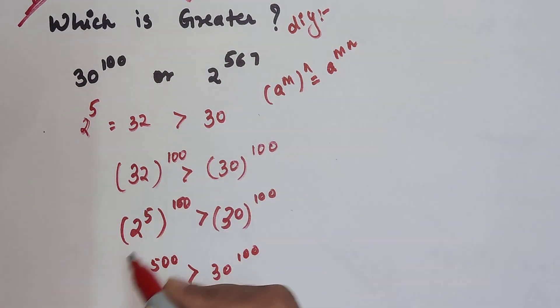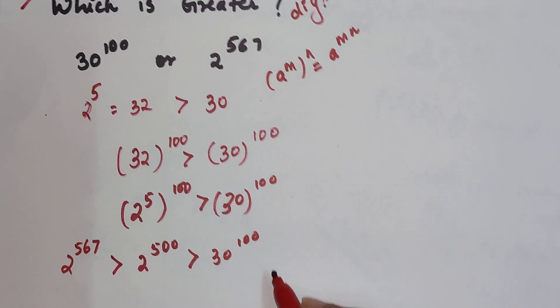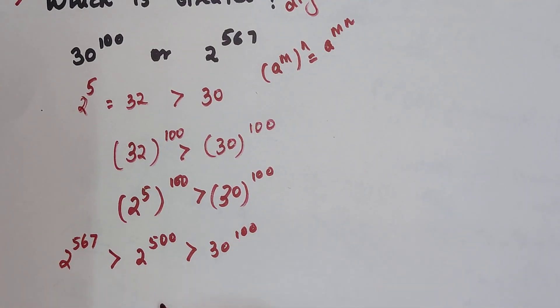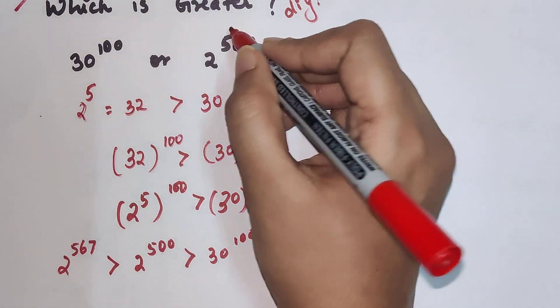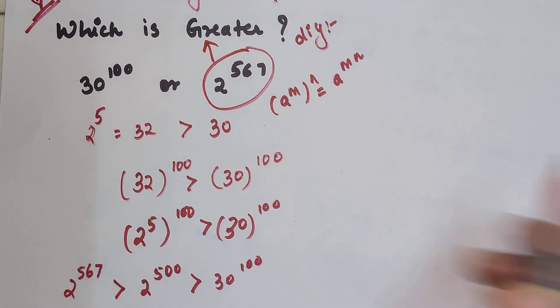And 2 raised to 567 is greater than 2 raised to 500. So by this analogy I can say that this value is greater than 30 raised to 100. So by this analogy I can say that this value is the greater one amongst these two.